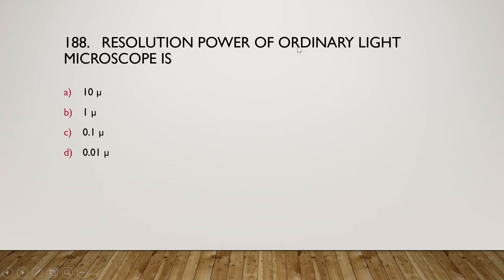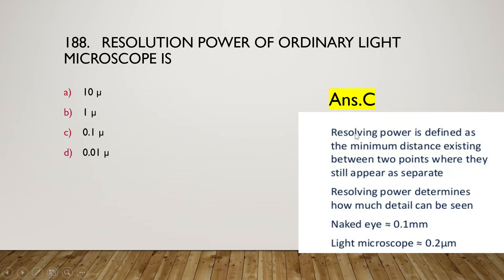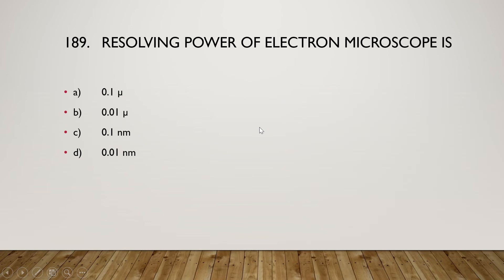The next question: resolution power of an ordinary light microscope is 10 micron, 1 micron, 0.1 micron, or 0.01 micron? The right answer is option C, 0.1 micron. Resolving power is defined as the minimum distance between two points where they still appear as separate. In the naked eye the resolving power is 0.1 millimeter, and for the light microscope the resolving power is 0.2 micrometer.